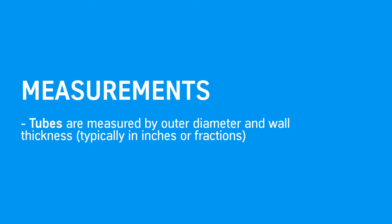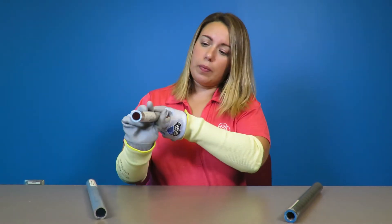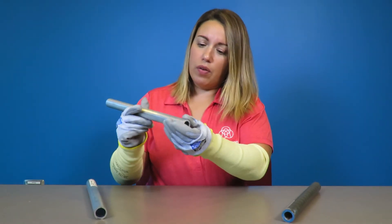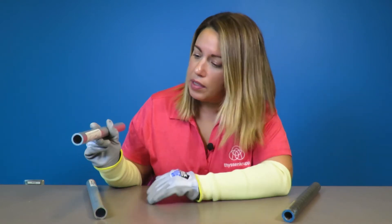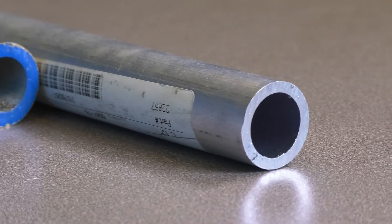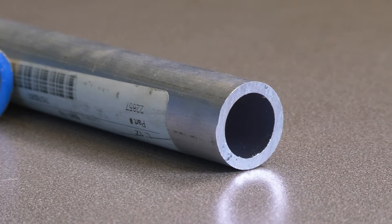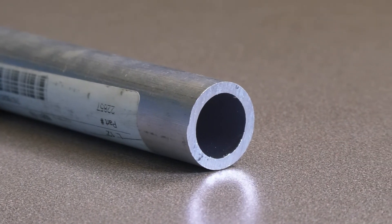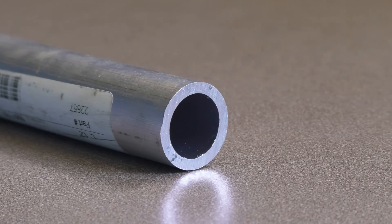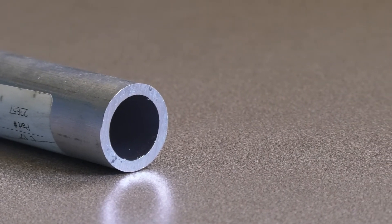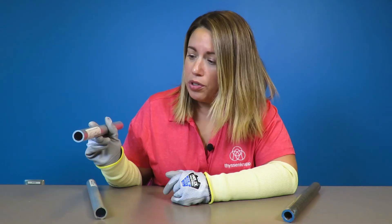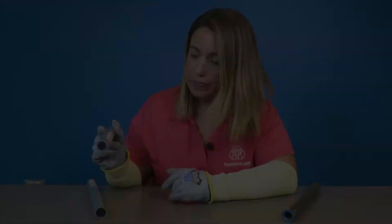One example I have here today is an extruded aluminum tube. It says on here that it's a one inch outer diameter by a 0.125 inch thick wall thickness.